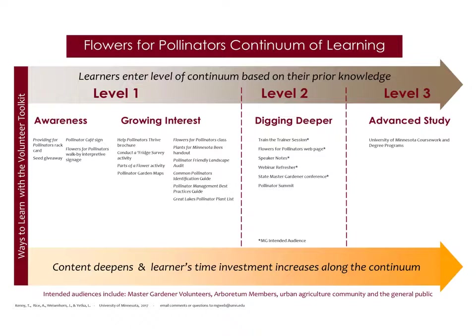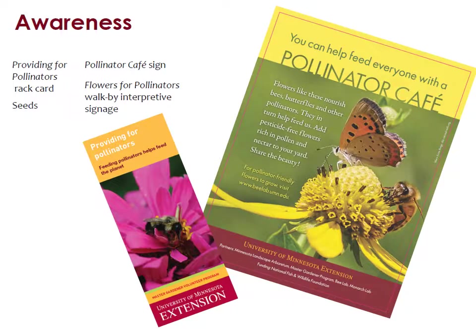Consider someone who may have very little knowledge about plants and pollinators. How can you best reach out to this individual when they may not even know that pollinators need plants to survive? You can build awareness with simple, easy to comprehend materials, such as a packet of seeds or the Providing for Pollinators rack card. You can also install interpretive walk-by signage, which can reach out to people without much prior knowledge and simply build awareness of the natural world around them.